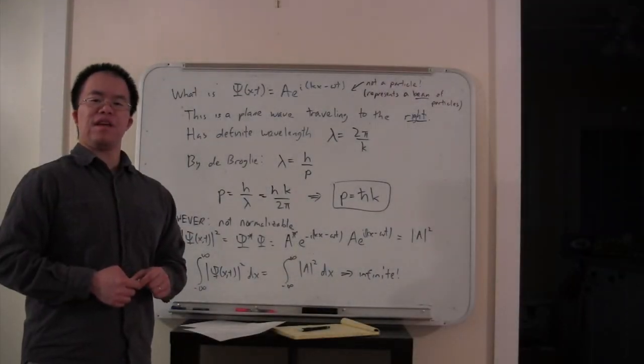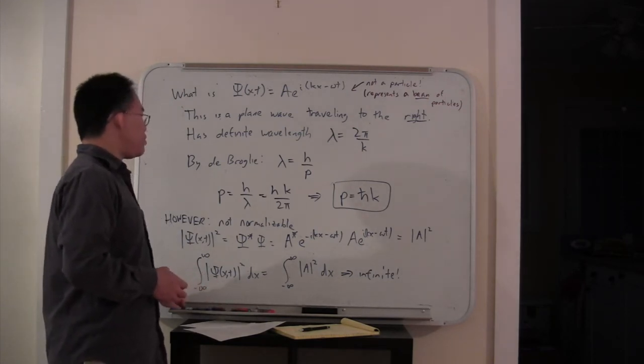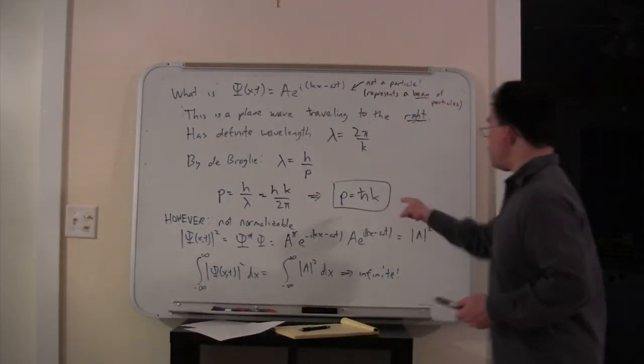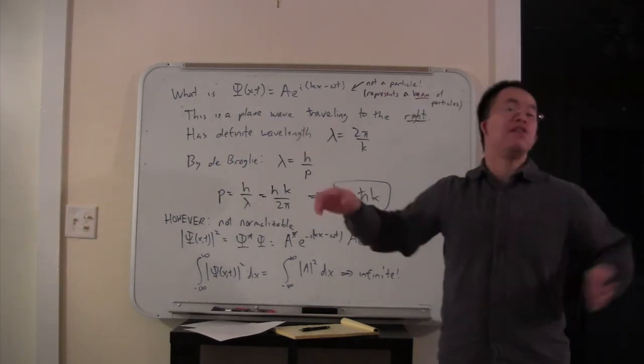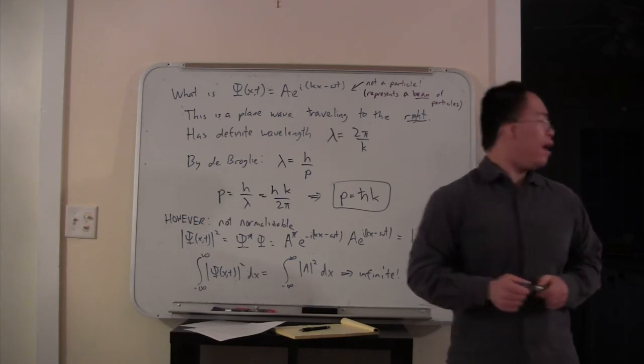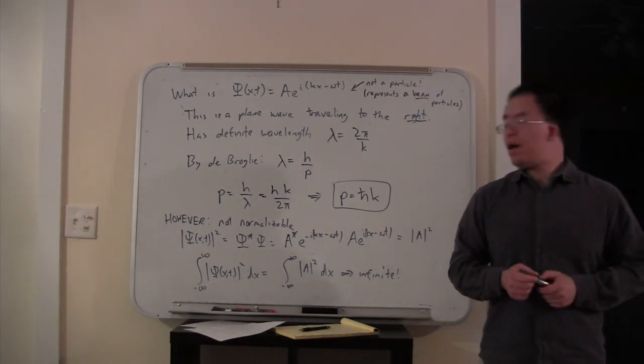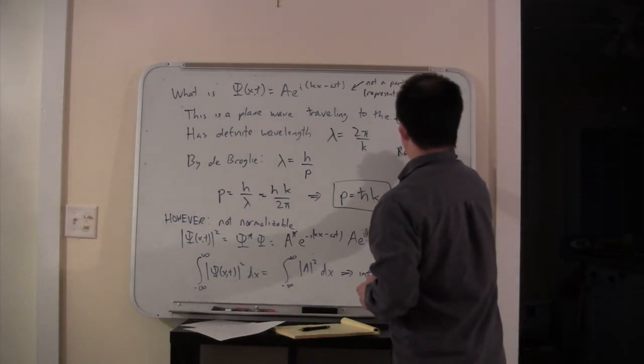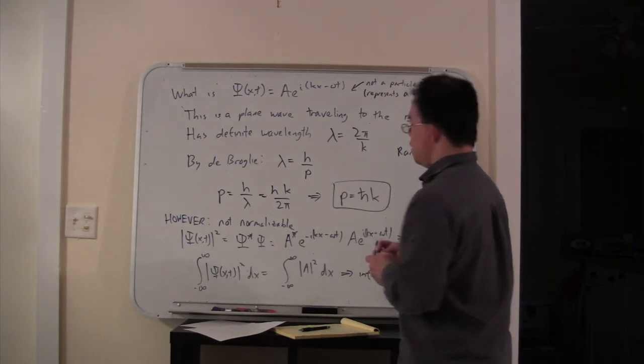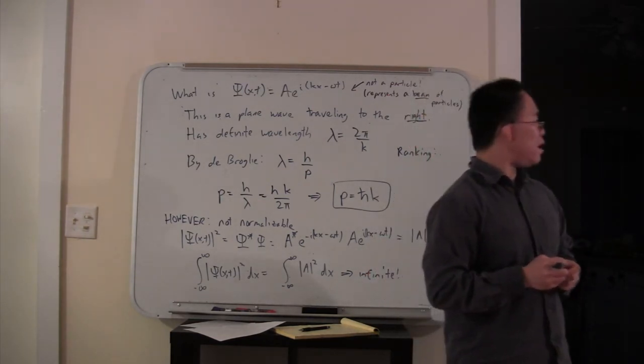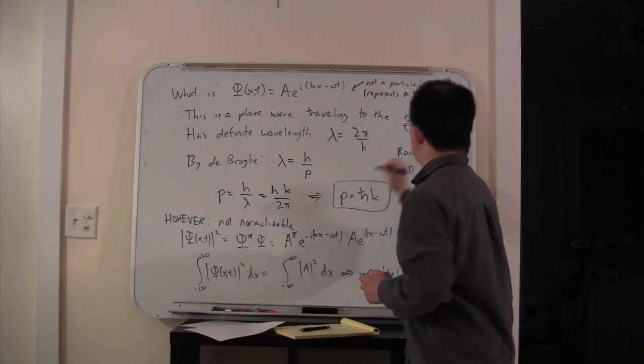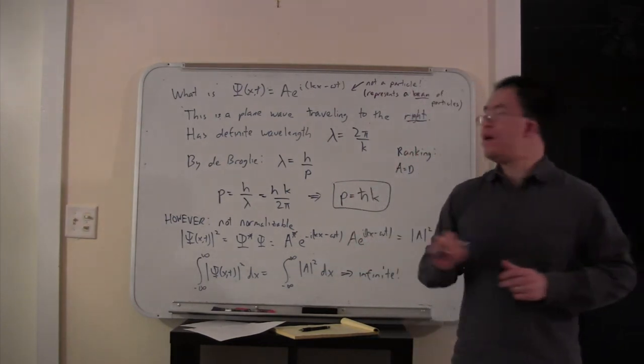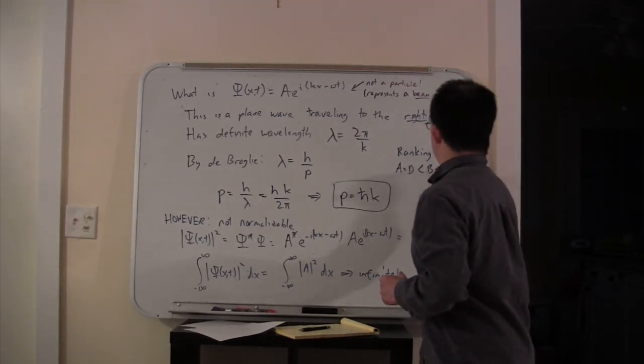Now that you've had a chance to think about the clicker question, here's what we want to remember. From this relationship here, bigger p is associated with bigger k, or you can think about it as bigger p is a shorter wavelength. That leads us to the ranking: a equals d, which is less than b, which is less than c.